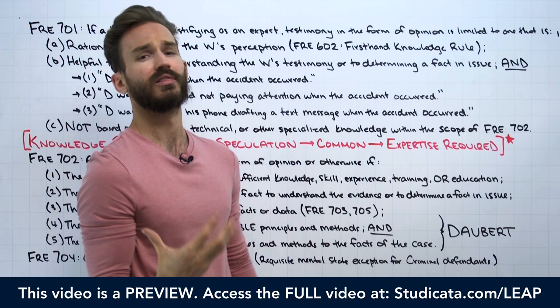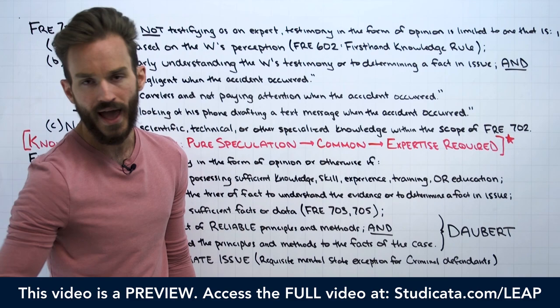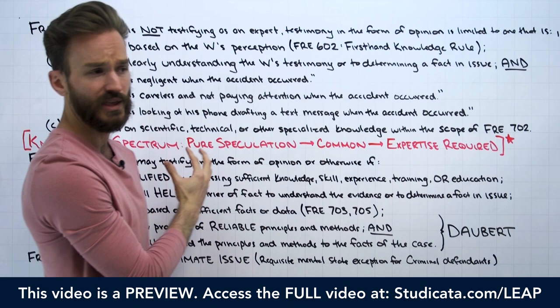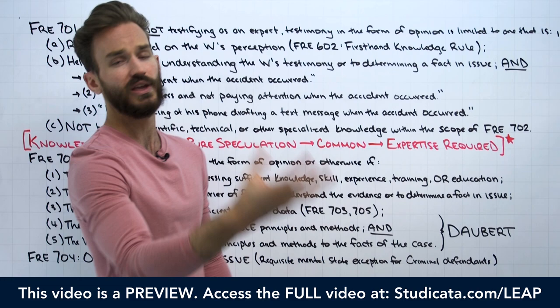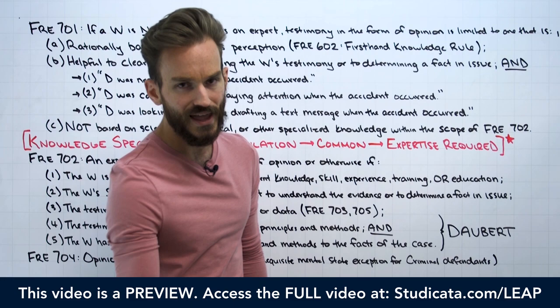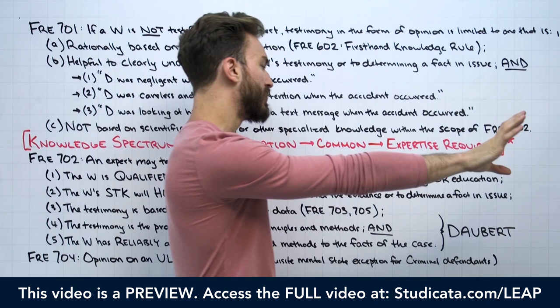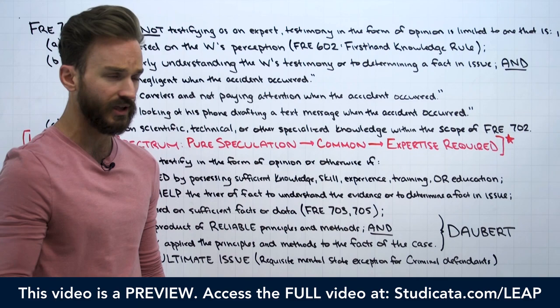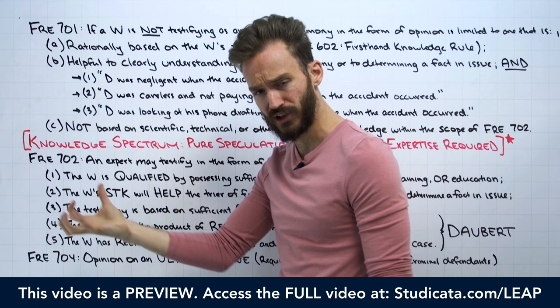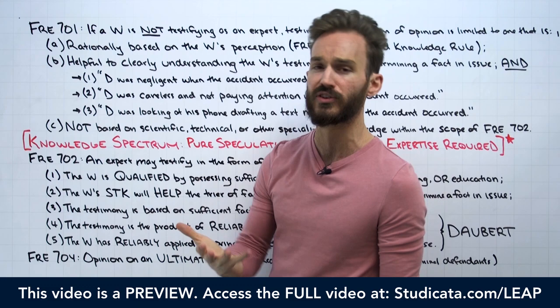To that level, expertise is required. You need to be a medical doctor or at least a lab technician trained to do that. That's not common knowledge. But I probably could look at someone and say, 'That person's probably sick right now.' So at the bottom of the spectrum: pure speculation. In the middle: common knowledge. And at the top: opinions requiring expertise, which fall under 702.